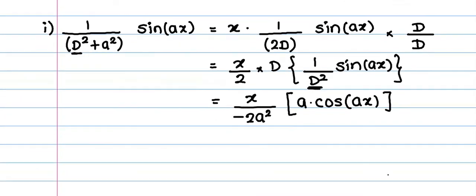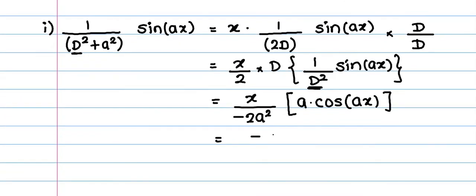If we simplify, we get minus x times cos A x upon 2 times A. So this will be the formula.